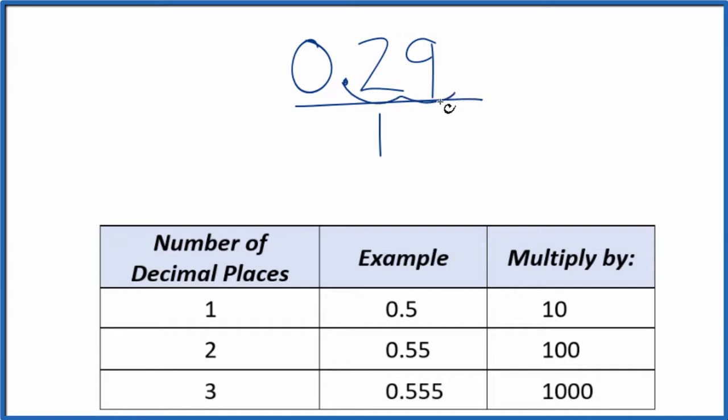We have two decimal places. We're going to multiply the numerator here by 100, and that'll give us a whole number. So 100 times 0.29, that equals 29. So we have a whole number here.